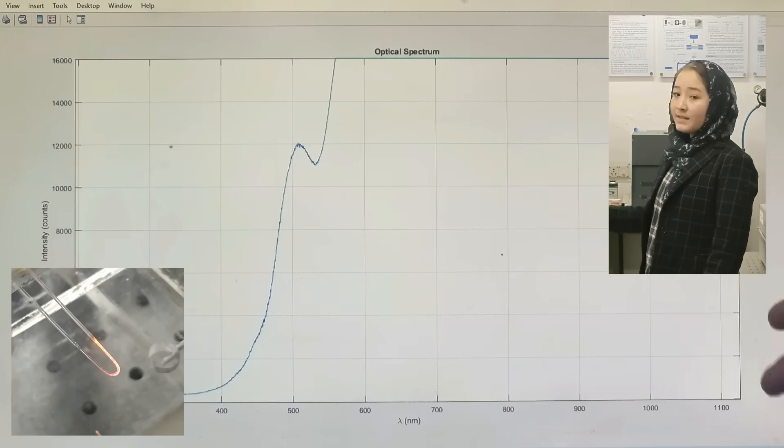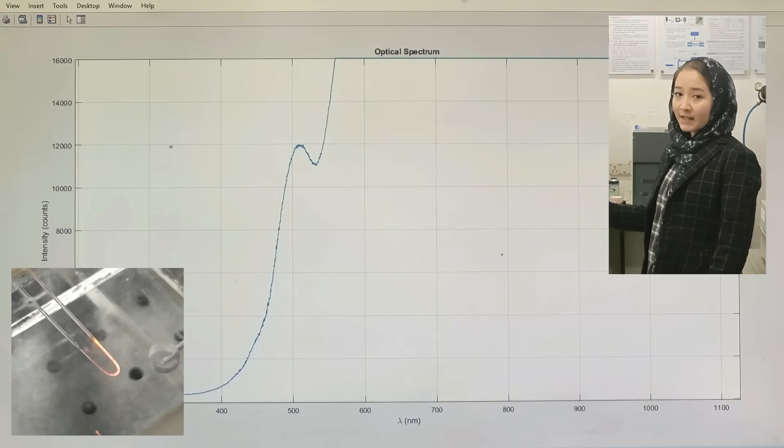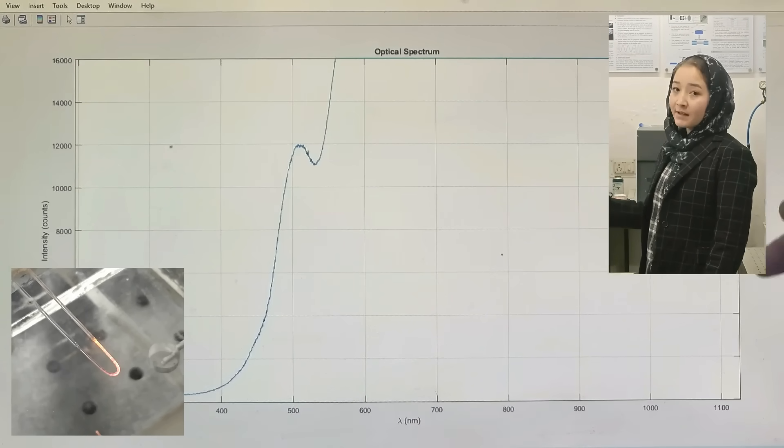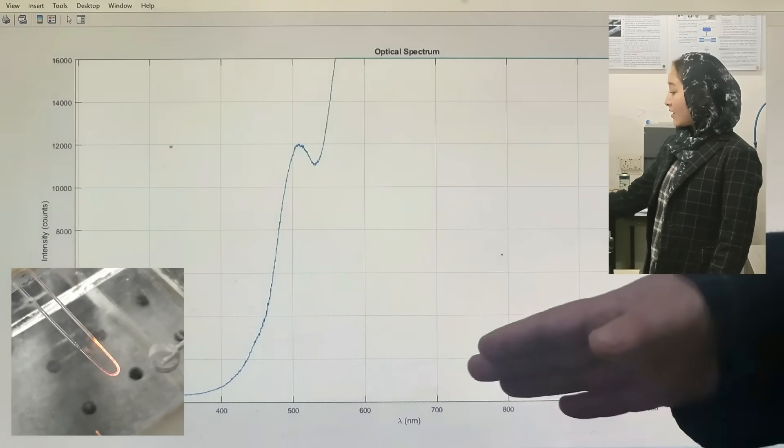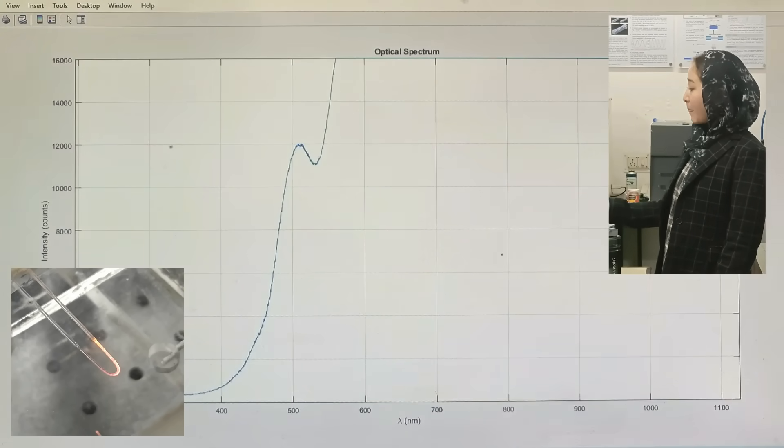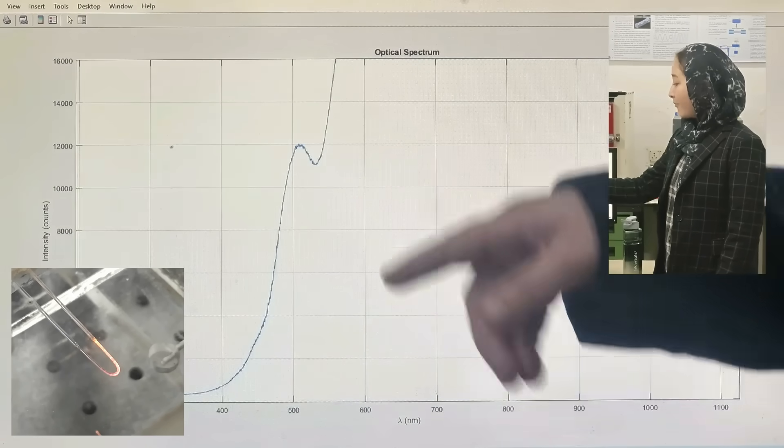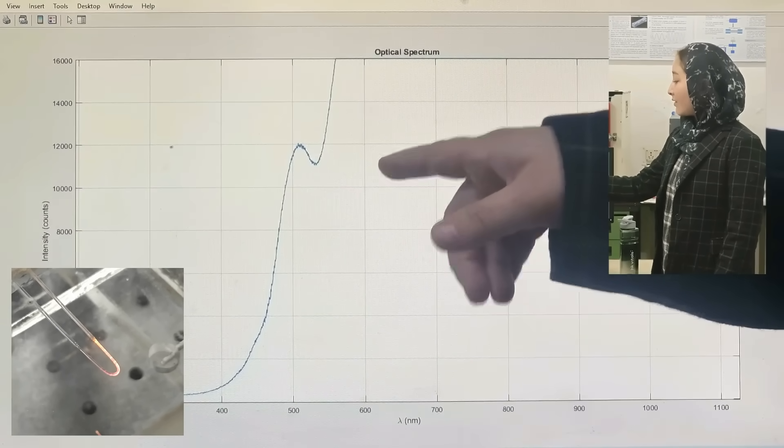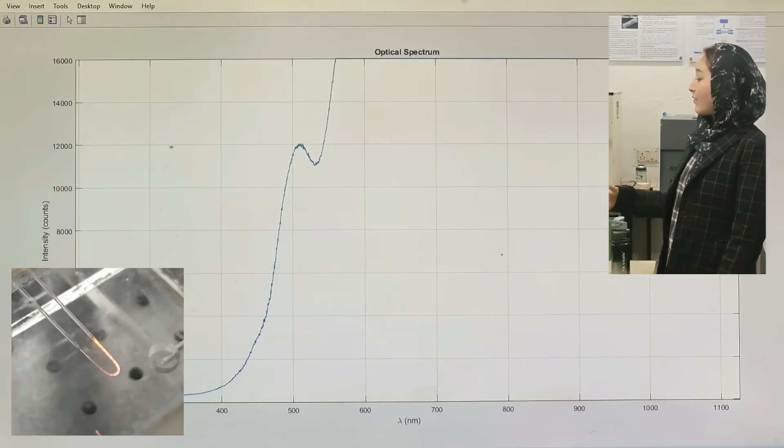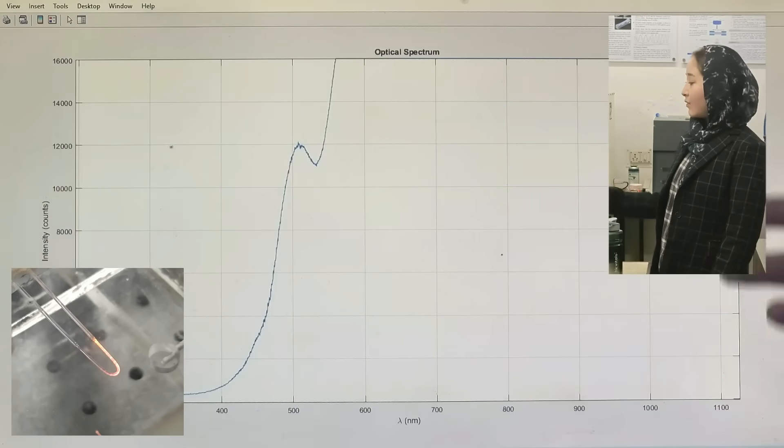When the sensor is exposed to some arsenic contaminated water, the resonance condition changes which in turn changes the resonance wavelength. This is reflected by the shift in the resonance dip. By measuring the shift in the resonance dip, we can quantify the amount of arsenic present in the water sample tested.